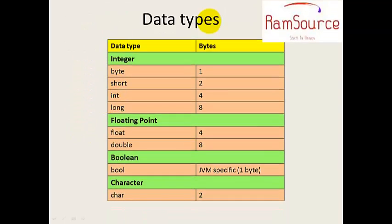First, data types. When we compare Java to C++ and C, the ranges differ in Java. For example, the byte is 1 byte in Java. In C++ and C, the character is 2 bytes. All these differences are there.